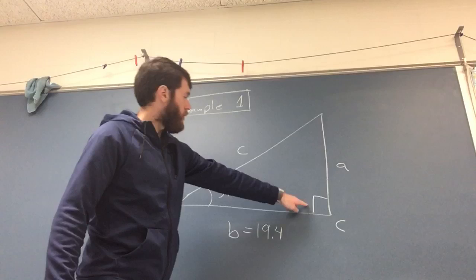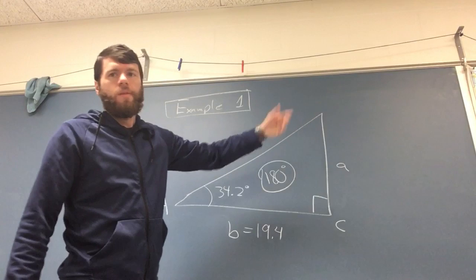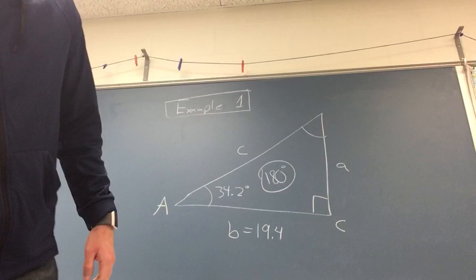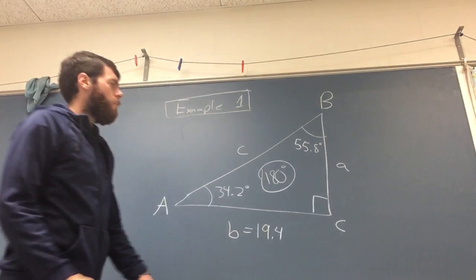To find the other angle: this is 90, this is 34.2, sum of all the angles in a triangle is 180. So we could just add them up and subtract, and I believe this comes out to be 54.8. That's what it is: 54.8 degrees. And that would be our angle B, which I forgot to label. So we've got all the angles.